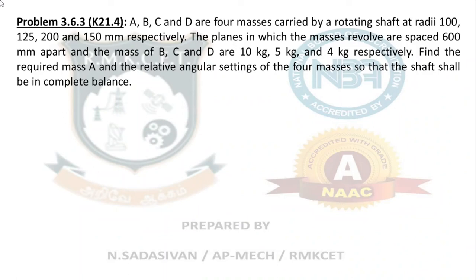Next problem. This is a very simple, normal conventional problem. A, B, C, D are 4 masses carried by a rotating shaft at radii 100, 125, 200, and 150 mm respectively. Planes in which the masses revolve are spaced 600 mm apart, and mass of B, C, and D are 10, 5, and 4 kg respectively. Find the required mass A and the relative angular setting of the 4 masses so that the shaft shall be in complete balance.